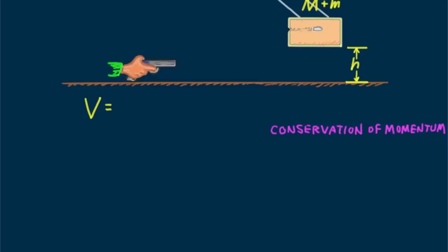So we write this as mV equals (M+m)v, where little m is the mass of the bullet, big V is the bullet's velocity, what we're looking for, big M is the mass of the block, and little v is the velocity of the block with the bullet immediately after collision. So we see that big V equals the sum of the masses over the little mass times little v.